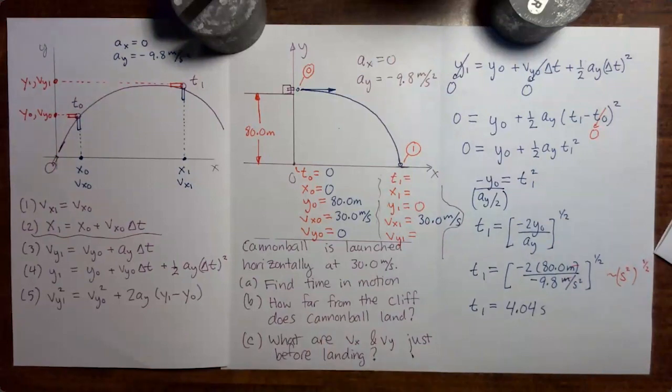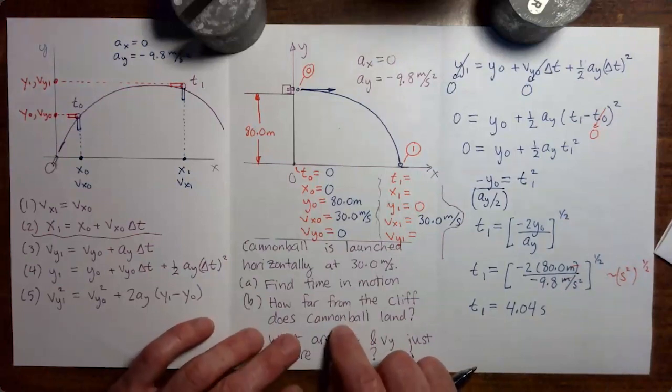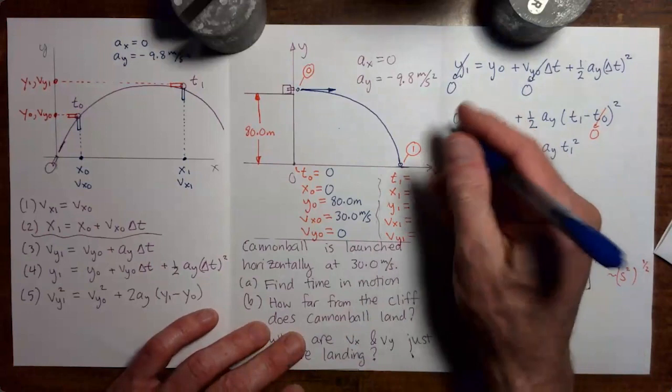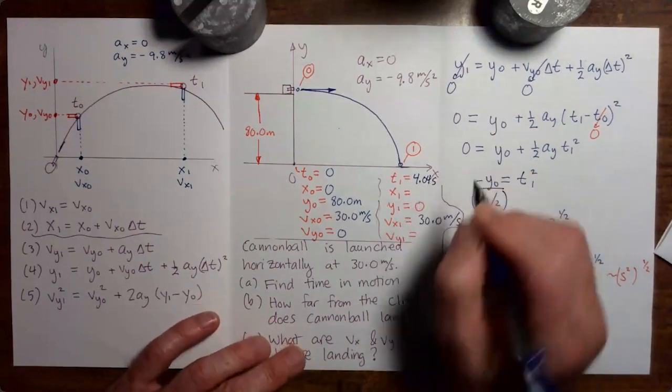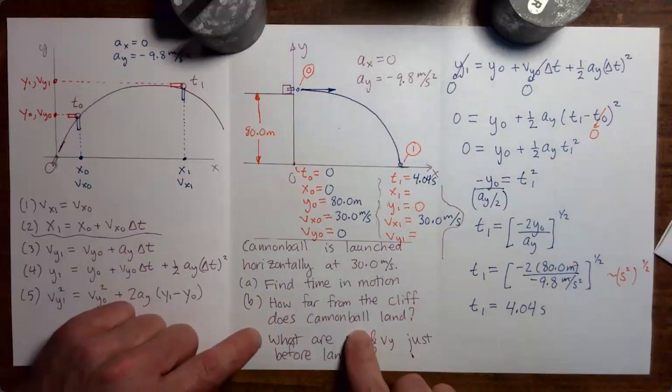Let's go on to part b. How far from the cliff does the cannonball land? In other words, in part b we are looking for x1. I'm going to fill in time 1 first.